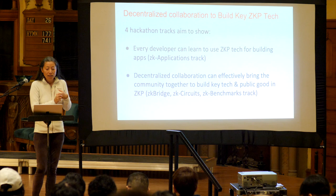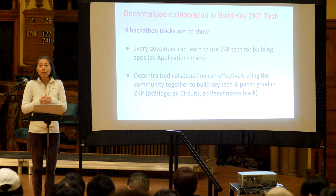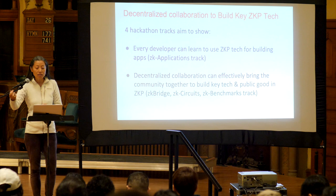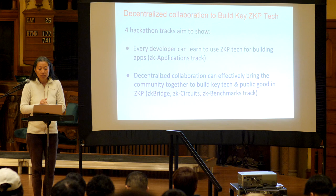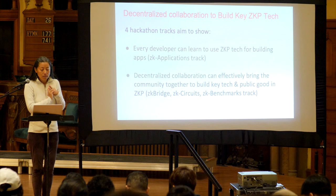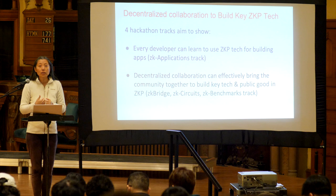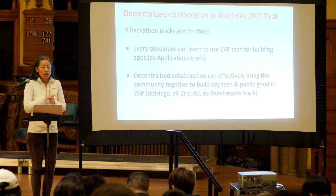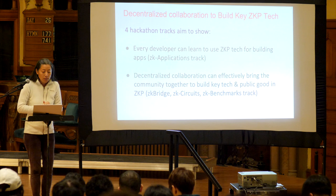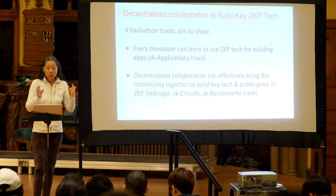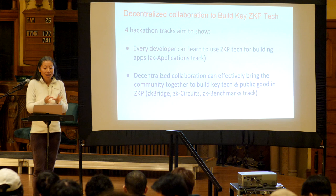The second goal, which I think fits with the ethos here very well, is to demonstrate that through decentralized collaboration, the community can actually come together to build the key technology and public goods in ZKP. This applies to three tracks, one of which is ZK Bridge — using ZK proofs to build a truly trustless and permissionless bridge that provides the best security. We hope that at the end of the hackathon, the community can come together and bring different pieces to really have a community-built ZK Bridge.